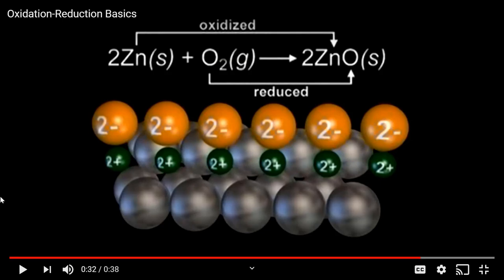I hope you also noticed how things change size. Neutral zinc became smaller when it became zinc 2+. And the oxygen that came in became larger when the oxygen atoms became oxide or anions.